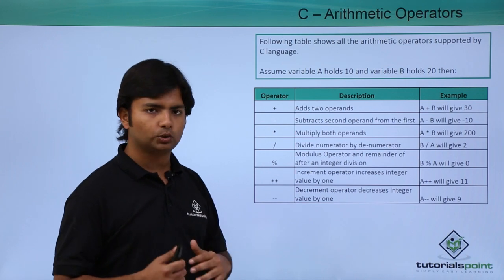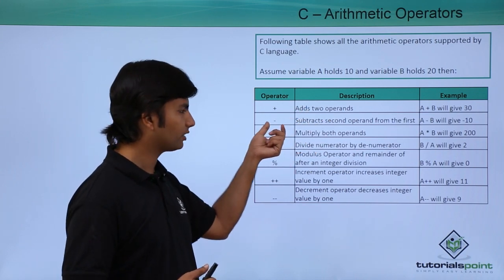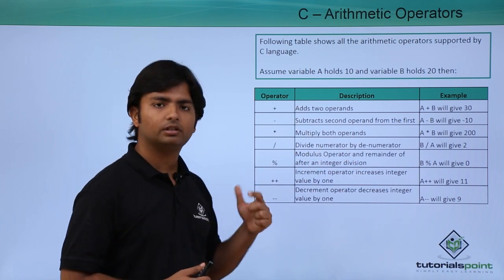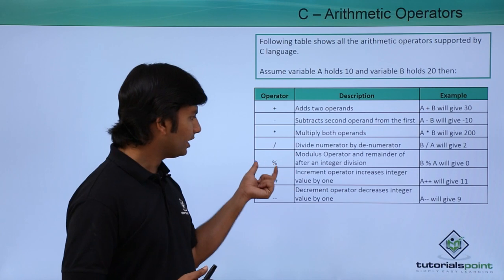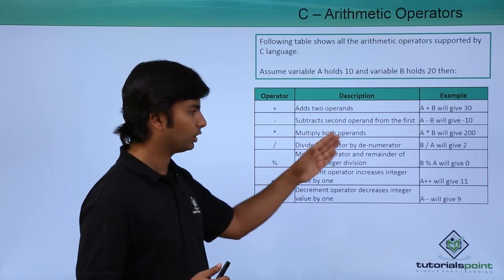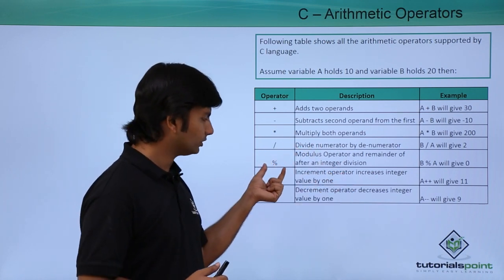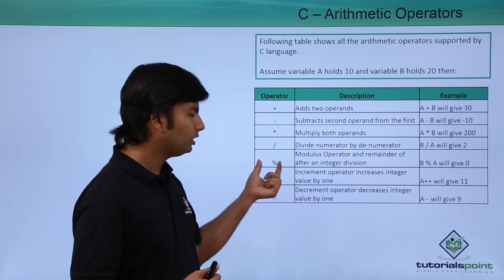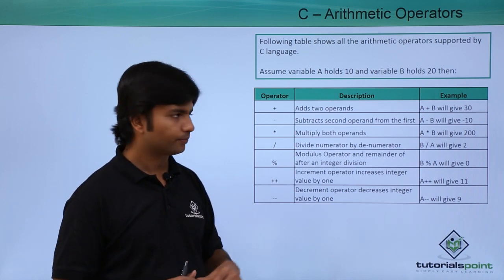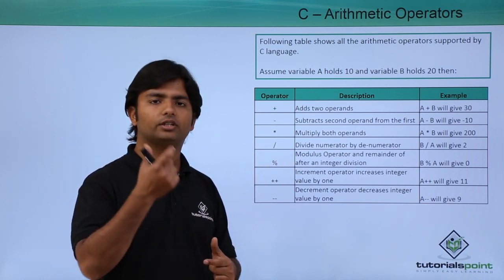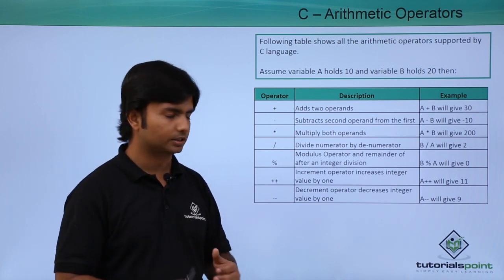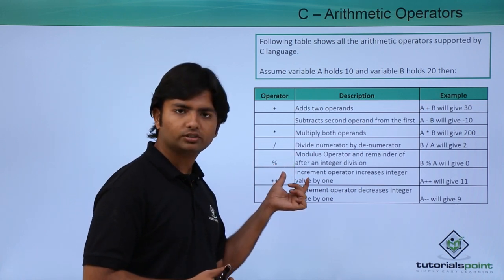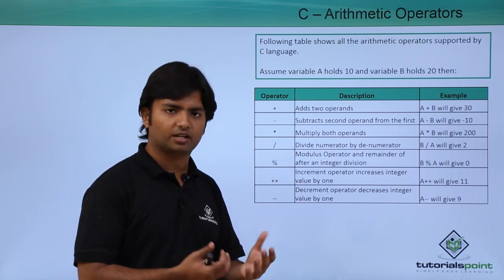The plus operator is used for adding two numbers. The hyphen symbol is used for subtraction. The asterisk symbol is used for multiplying two values. The forward slash is used for division. The modulus — the percentage symbol — is also used for division, but it returns the remainder part. When you divide two numbers, you get a quotient and a remainder. The slash symbol handles the quotient part while the modulus symbol handles the remainder.